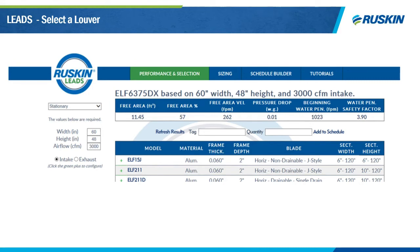One of the first options in LEADS is how to select a louver. Let's say you have a spec, you know what size you need and the amount of airflow, but you're not sure which model to use. You can go to Ruskin's LEADS program and select the Performance Selection section. Choose the category of louver from the drop-down menu — in this case stationary louvers. I know I need a 60 by 48 assembly that needs to pass 3,000 CFM of intake air. By simply clicking on the plus signs next to a model, you can find out exactly how that louver is going to perform. Our ELS 6275DX in this situation offers 11.45 square feet of free area — 57% free area — with a free area velocity of 262 feet per minute and 0.01 inches water gauge of pressure drop.